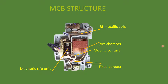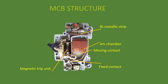Another type of protection the MCB offers is overload protection. A bimetallic strip is used for this — it is made of two metal combinations with specific properties. If the load increases, the current through the bimetallic strip also increases, causing more heat to be produced. Due to this heat, the bimetallic strip bends, which disconnects the contact and interrupts the power supply. This is how the overcurrent protection mechanism works in an MCB.